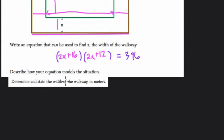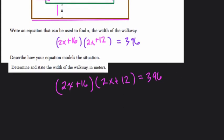Determine and state the width of the walkway in meters. Okay, so basically they want us to solve for x and then use that value to find out how wide this thing actually is. So let's do that. We have 2x plus 16 times 2x plus 12 equals 396. Okay, so here we're going to simplify a little bit.